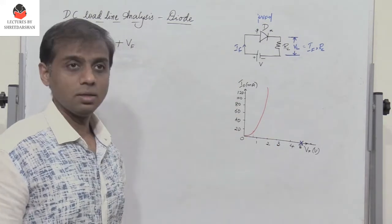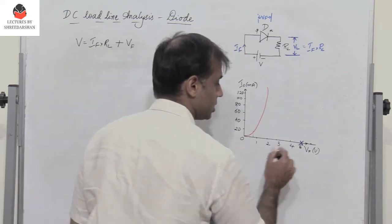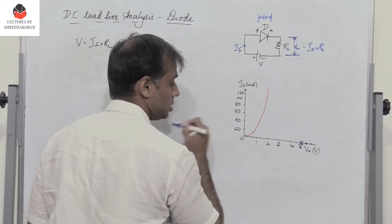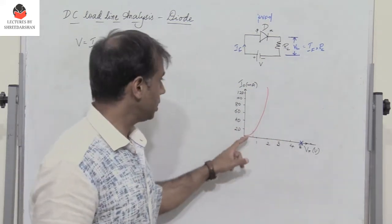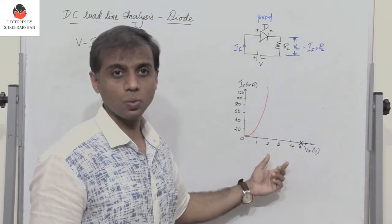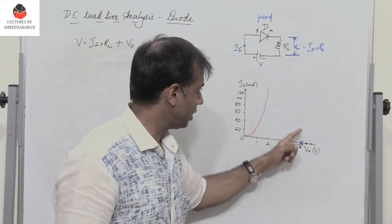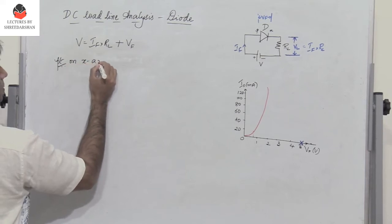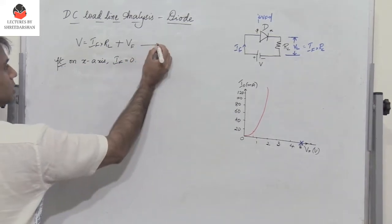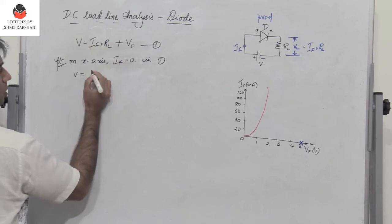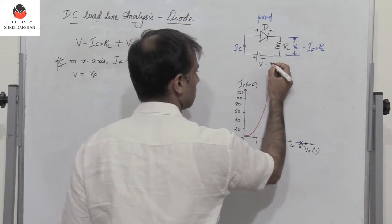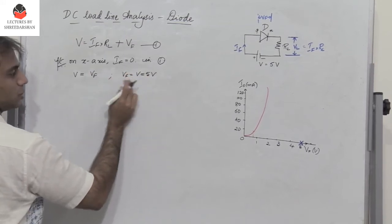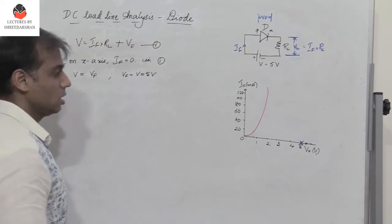To draw the DC load line, I need to find a point on the x-axis and a point on the y-axis, where the x-axis is VF and the y-axis is IF. To find the point on the x-axis, I make IF equal to 0 in equation 1. So V equals VF, and assuming the voltage is 5 volts, VF equals 5 volts. This gives a point on the x-axis at (5, 0).